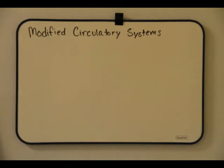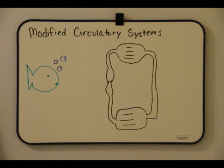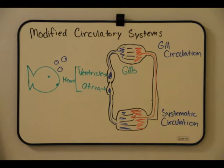Vertebrate circulatory systems have been modified by natural selection. Fishes have a two-chambered heart with a single circuit of flow. Gill circulation is when blood from the heart goes to the gills first and disposes of carbon dioxide and receives oxygen. In systemic circulation, the oxygen is given to the other parts through capillaries.